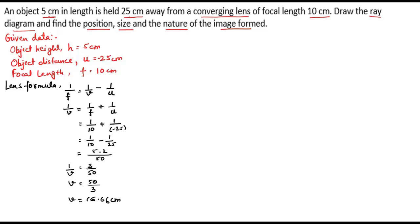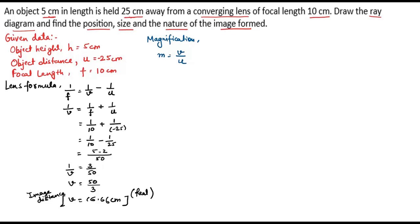After solving this, we get v = 16.66 cm. This is the value of image distance. Since this image distance is positive, we can say that the image formed will be real. Now, to find the size of the image, we use the formula for magnification: m = image distance divided by object distance. Substituting, v is 16.66 cm.